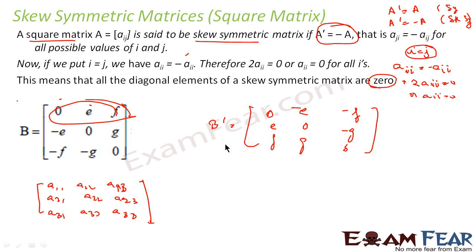Minus g becomes g, and 0 is 0. So B transpose is nothing but minus B.